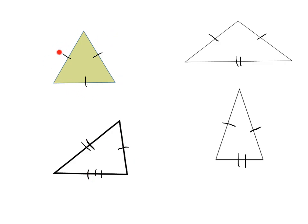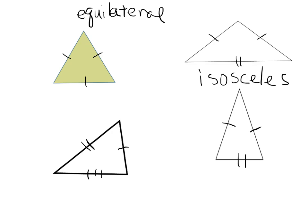Because all three side lengths are the same, that makes this an equilateral triangle. These triangles over here have two sides that are the same and one that is different — those are called isosceles triangles. And this one down here, because all three sides are different and there are no matching side lengths, that is called a scalene triangle.